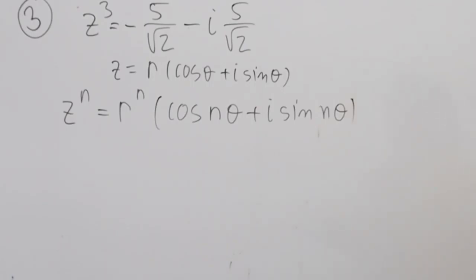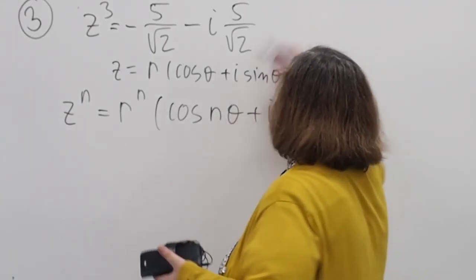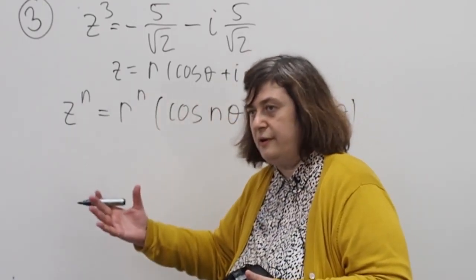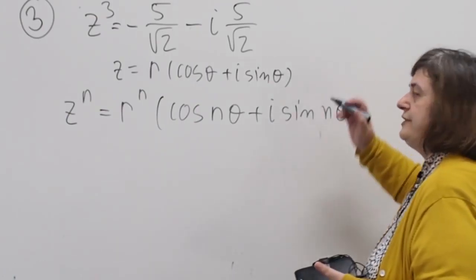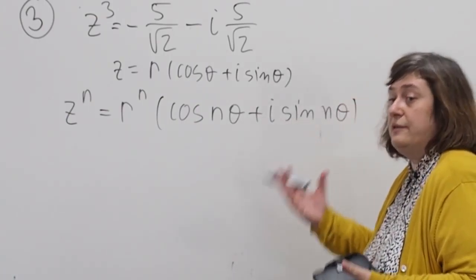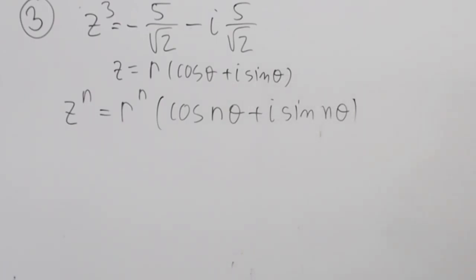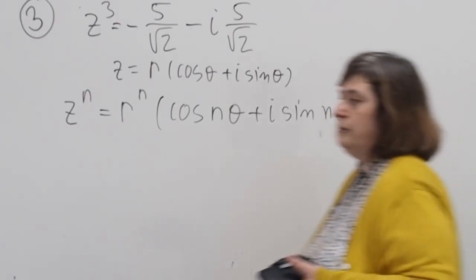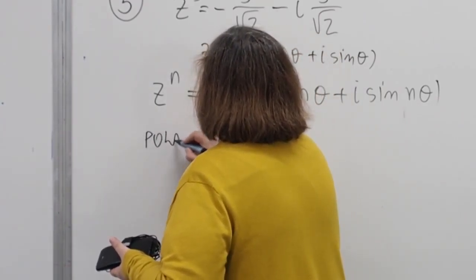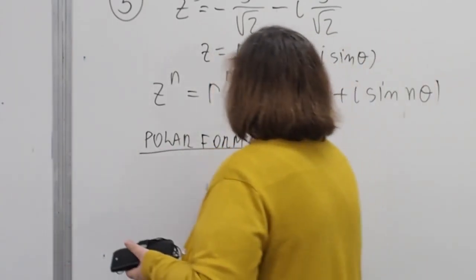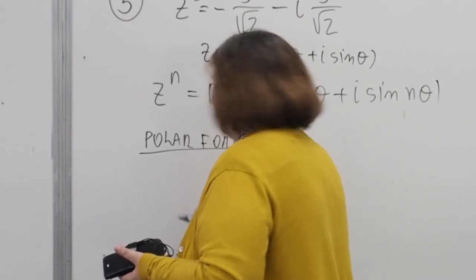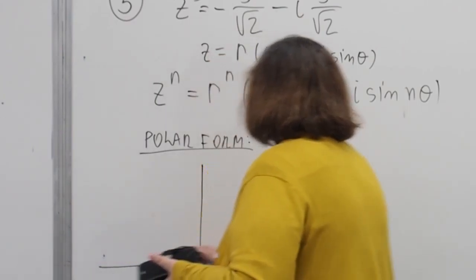Where θ is the original angle. We will be using this theorem. First we will convert z³ into polar form, and then we will take the cube root — that is, raise to the power of one third — to find the three solutions. So let's first convert into polar form.